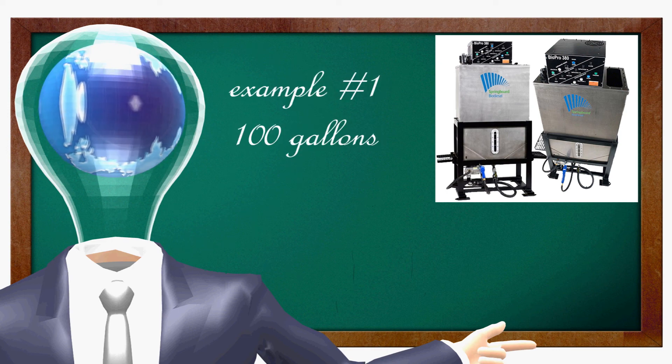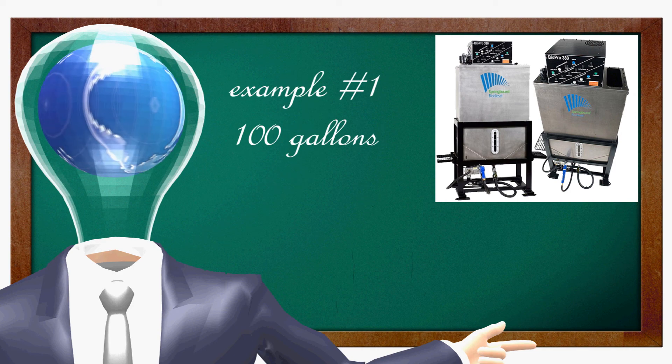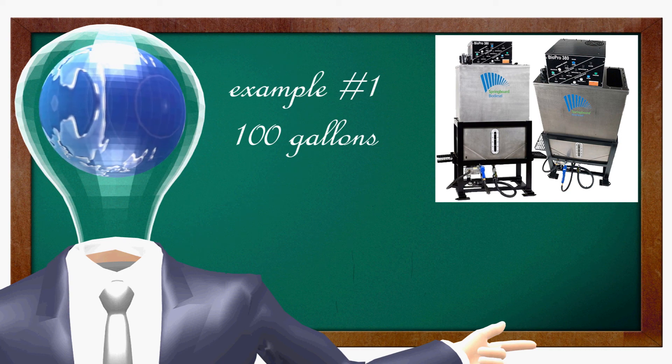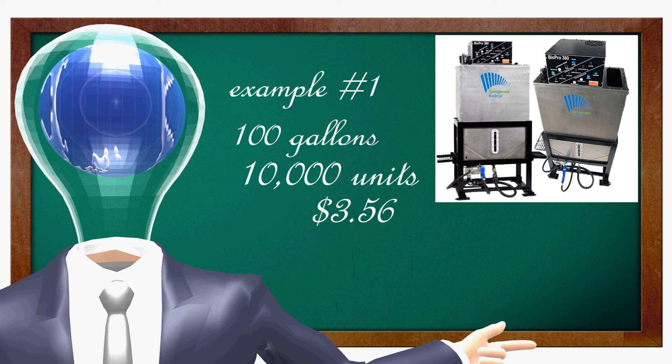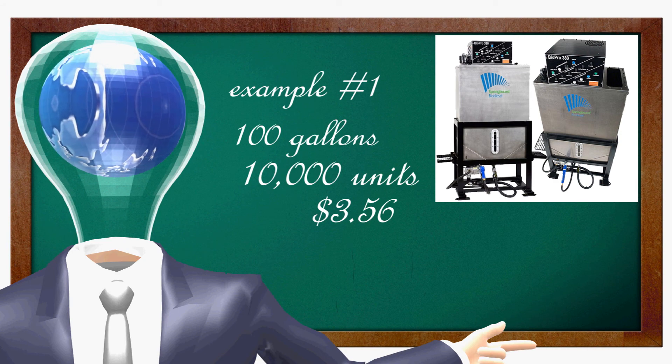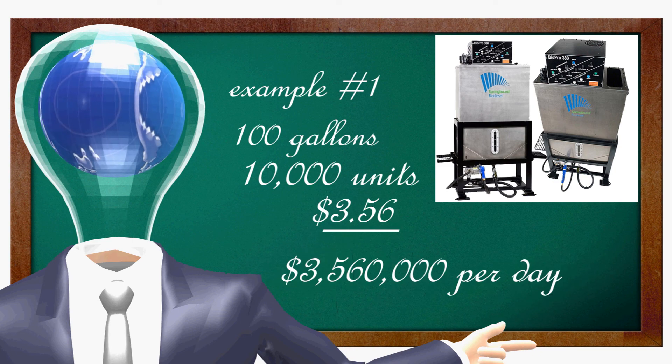One 100 gallon per day biofuel plant per rural farm community in the USA. The formula for this is 100 gallons of fuel, times 10,000 units nationally, times $3.56, which is the cost of fuel today. The total for this equation is $3,560,000 per day.